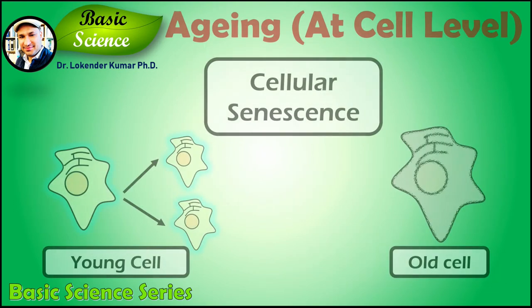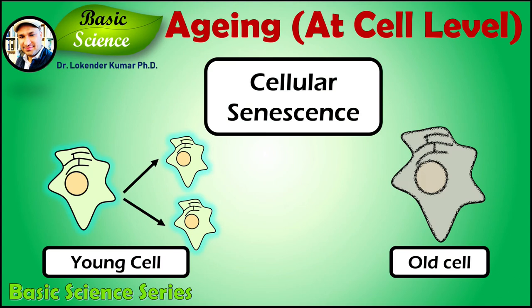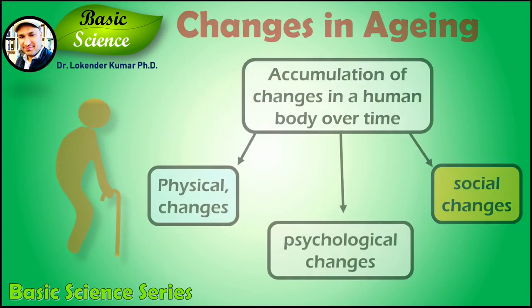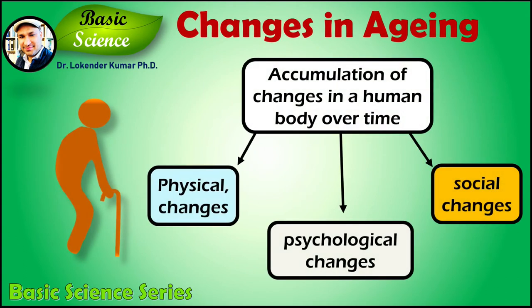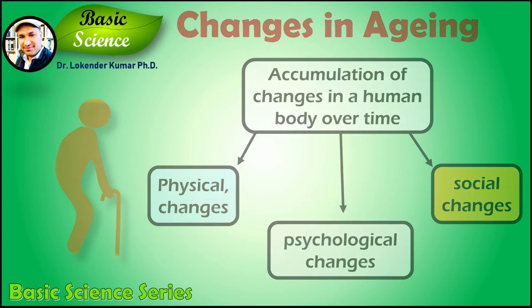In the broader sense, aging can refer to a single cell within an organism that has ceased dividing — this process is known as cellular senescence. In humans, aging represents the accumulation of changes in the human body over time, including physical, psychological, and social changes, which also include reaction time.